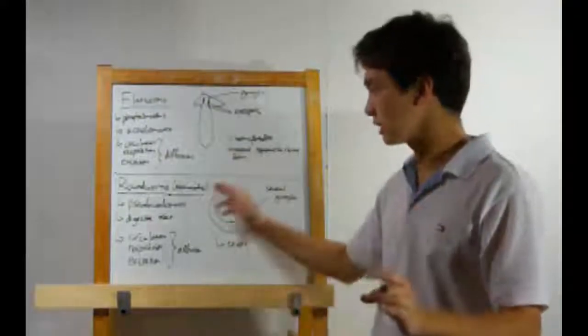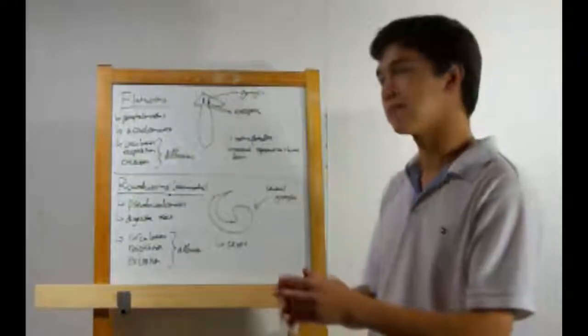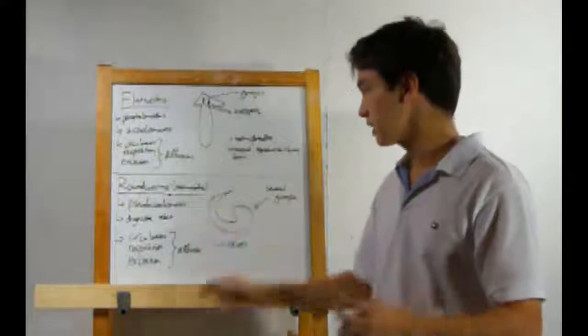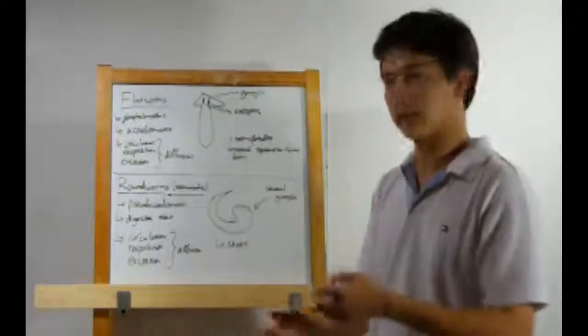Next up, roundworms, or nematodes. They're pseudocoelomates. That means they have kind of a body cavity, but it's not as developed as a real coelom. These guys do have a digestive tract. They have a mouth and an anus. It goes in the mouth and comes out the anus.